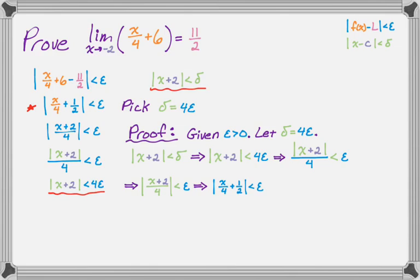Now I need to make it look like the first step from the epsilon inequality. If your work is neat, you can look at it and see how to turn this into the absolute value of f(x) minus L. We already know what that is from the scrap work, and we know we can do it because we've already done the steps in reverse. So we get that the absolute value of f(x) minus L is less than epsilon.